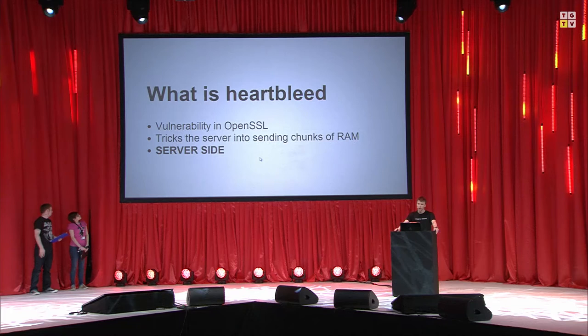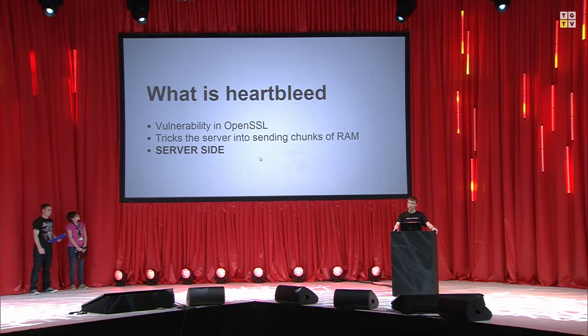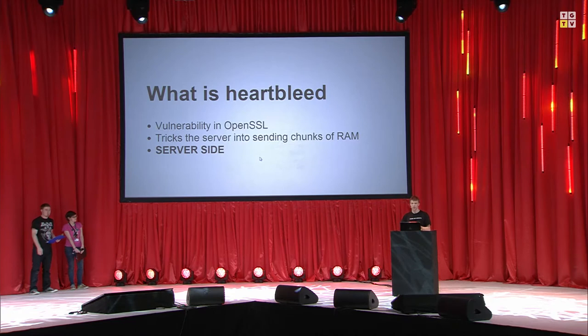Heartbleed is a security vulnerability in a software library called OpenSSL. It's used a lot in websites and web servers for delivering content encrypted to users, so that people can't see what you're doing if they have access to the network. It works by tricking the server into sending parts of its RAM to the attacker, which is a really serious vulnerability.